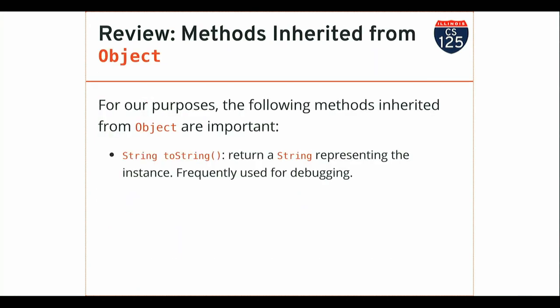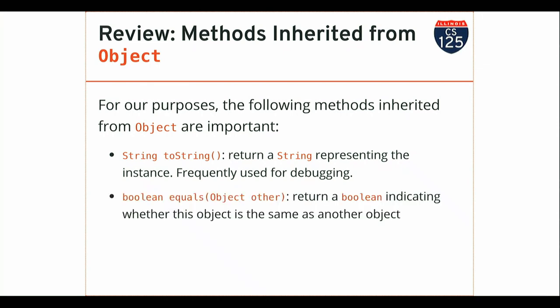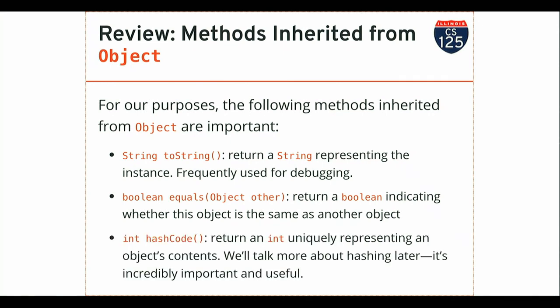There are a small number of really important methods that every single Java object has by virtue of inheriting them from capital O Object. These methods are: toString, which returns a string representation of an object; equals, which tests whether one object is equal to another; and hashCode, which returns an int. We'll talk more about what hashCode is used for later in the class. If we're working with any object in Java, it's going to have these methods — we can call toString, pass no arguments, and expect to get a string back.